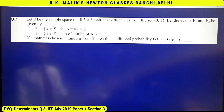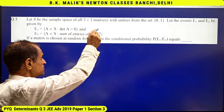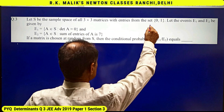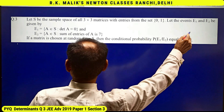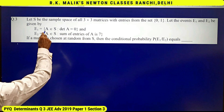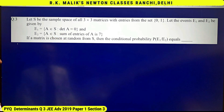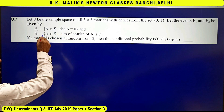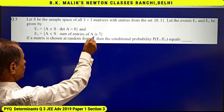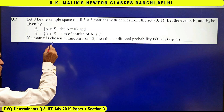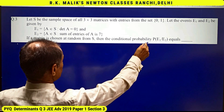In this question, let S be the sample space of all 3×3 matrices with entries from the set {0, 1}. Let events E1 and E2 be defined as: E1 means a matrix from set S for which the determinant of A is 0, and E2 means a matrix from set S such that the sum of entries of A is 7. A matrix is chosen at random from S.